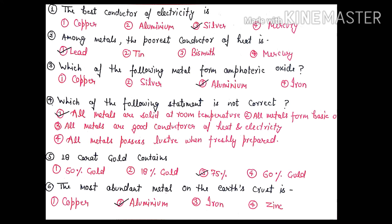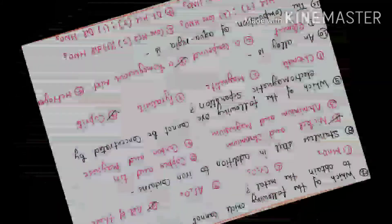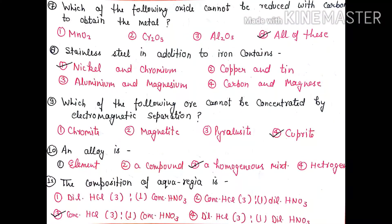Question 6: The most abundant metal on the earth's crust is - option 2, aluminium, is right. Question 7: Which of the following oxides cannot be reduced with carbon to obtain the metal? The right option is D, all of these.